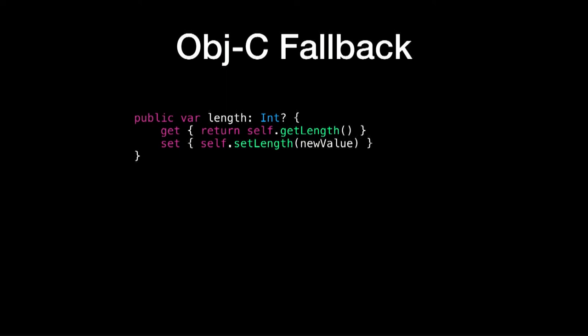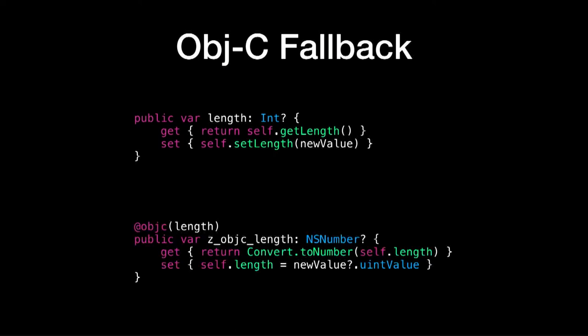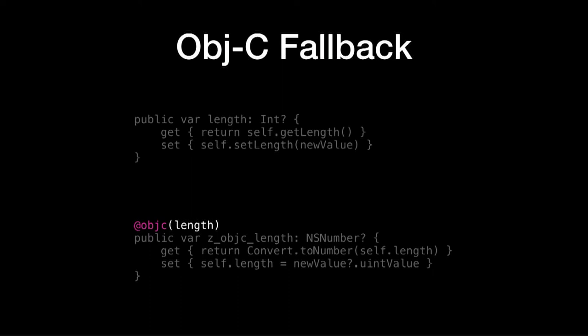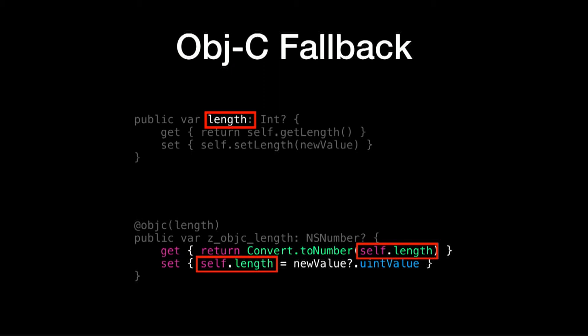You have a variable called `length` with type integer optional. This type is not bridgeable through Objective-C. So what we can do is write a supporting property. This property has `@objc length`, which is the name of the variable accessed in your Objective-C codebase. You use a type `NSNumber`, which is actually bridgeable to Objective-C. You name it `zObjcLength` — the reason being that this property lives in your Swift codebase and you don't want it to appear when typing a variable, so you prepend it with a `z` so that it appears at the end of the autocomplete. Finally, the getter and setter of the property use `self.length` as its own source of truth.